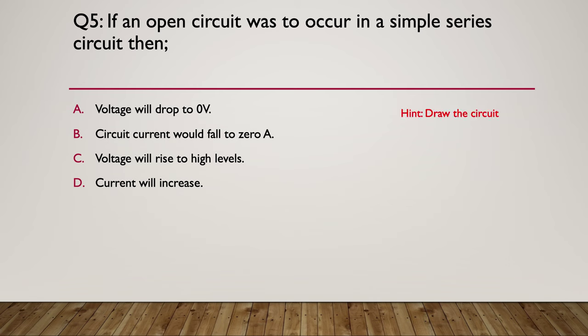So here's your hint. Draw a circuit diagram. Draw a little diagram of a simple series circuit. Make an open circuit in it somewhere and say to yourself, what's going to happen? So here's the answer, it was B, the circuit current will fall to zero amps. The applied voltage will not change, never does. Students often get this confused. Some of the voltages around the circuit might change but the applied voltage will not. Voltage will rise to high levels, no. Will current increase, no.